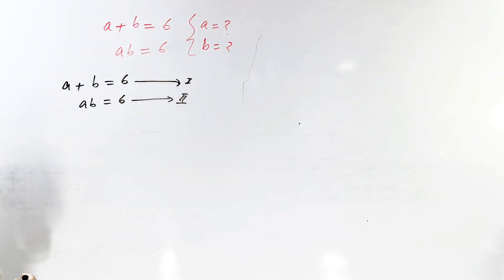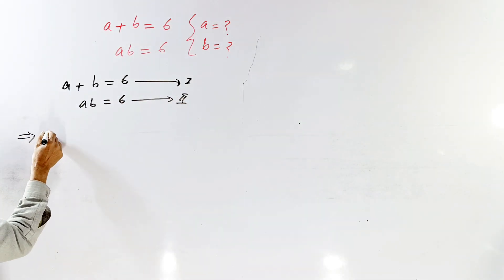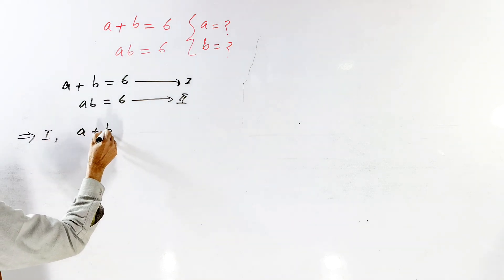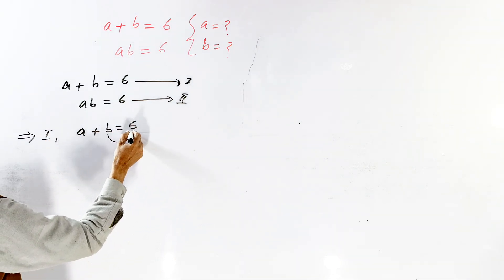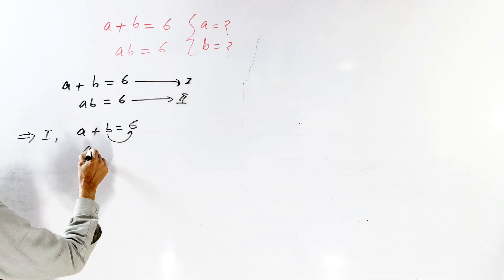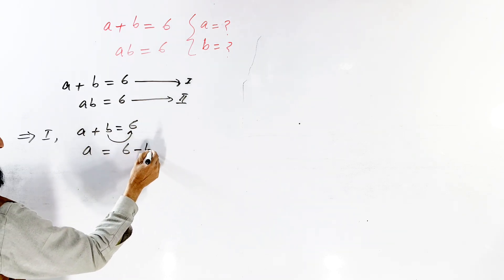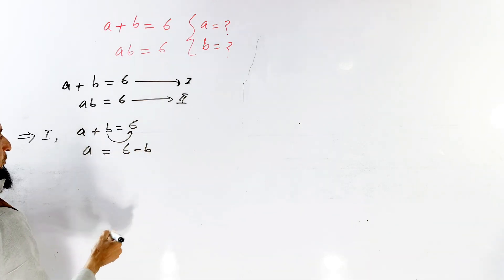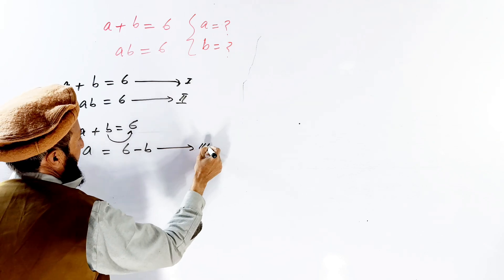Now from equation number one: A plus B is equal to 6. We rearrange this result, so A is equal to 6 minus B. Now we have equation number three.